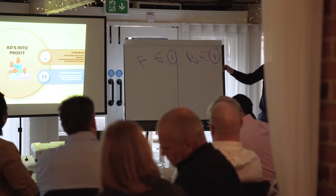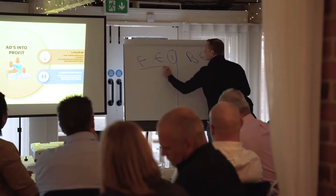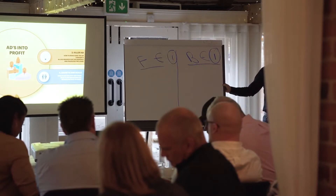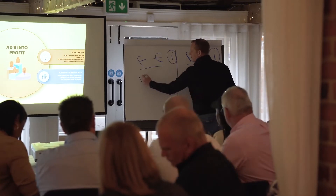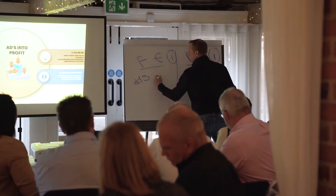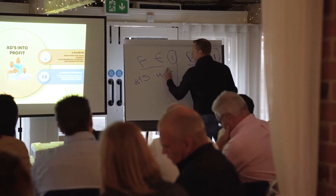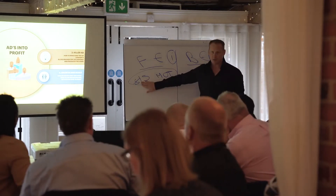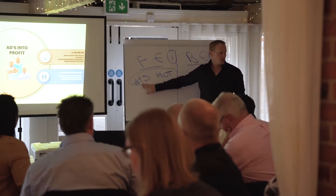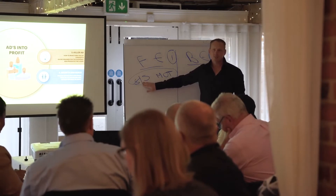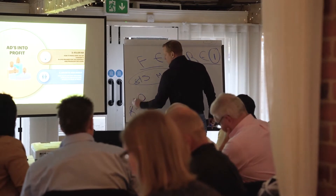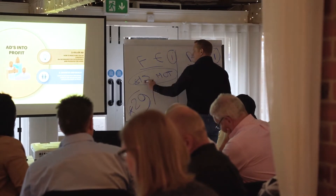What we have to understand is front-end income versus back-end income. Front-end income is this: for Cam's business — we'll take Cam as the example — Cam front-end markets a £15 MOT. When somebody books that £15 MOT, it's a complete no-brainer because it's the cheapest in the marketplace. When Cam actually markets that, it might cost him £20 to get the person to pay £15 for an MOT.